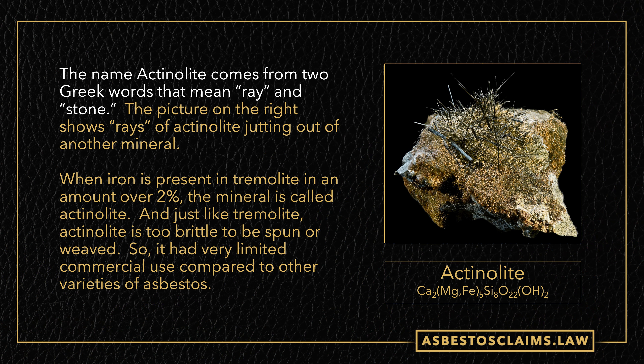Then we have actinolite. The name comes from two Greek words that mean ray of stone, and you can see those rays of asbestos jutting out of the stone — they look very sharp and pointy. If iron is present in tremolite at above 2%, it becomes actinolite, so actinolite and tremolite are very close cousins. Just like tremolite, actinolite didn't get a lot of commercial usage, but was used for a few applications — I believe in some automatic transmission bands early in the development of automatic transmissions.